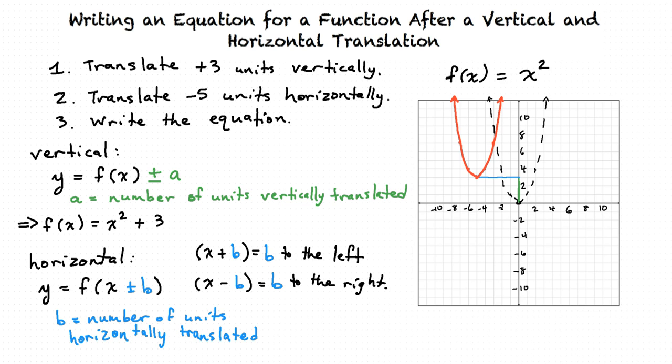From this info, how would we now write our equation with the horizontal translation? Is it f of x equals x minus 5 squared? Or wait, horizontal is opposite, so is it f of x equals x plus 5 squared? Yeah, you're right, because when it translates 5 units to the left, it is indeed written as x plus 5.